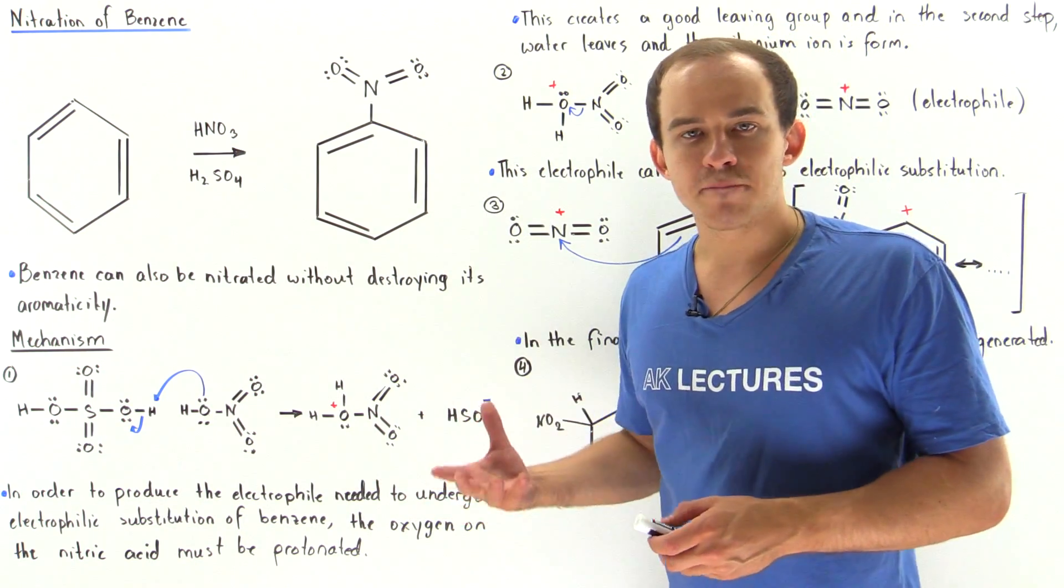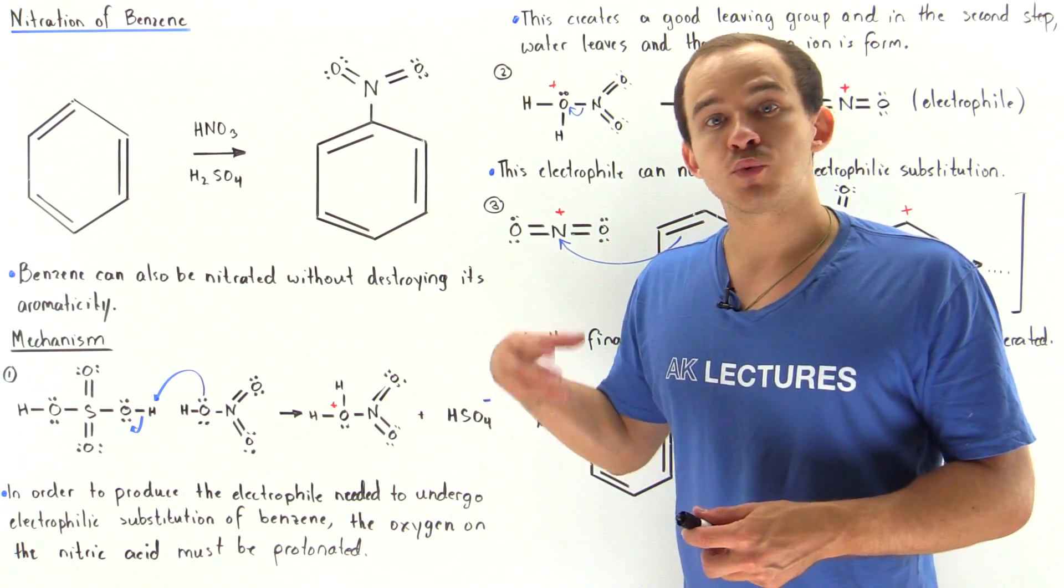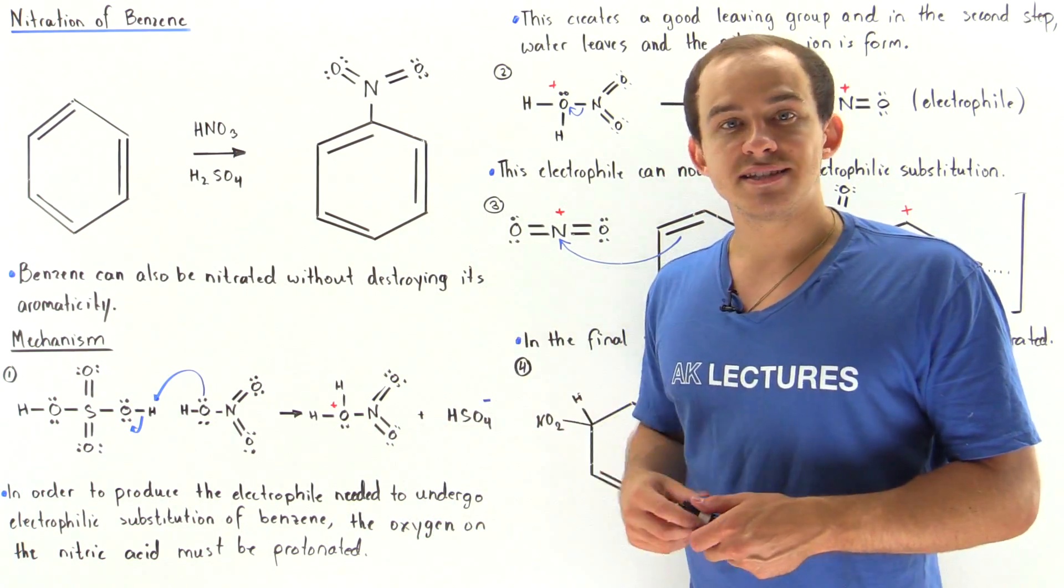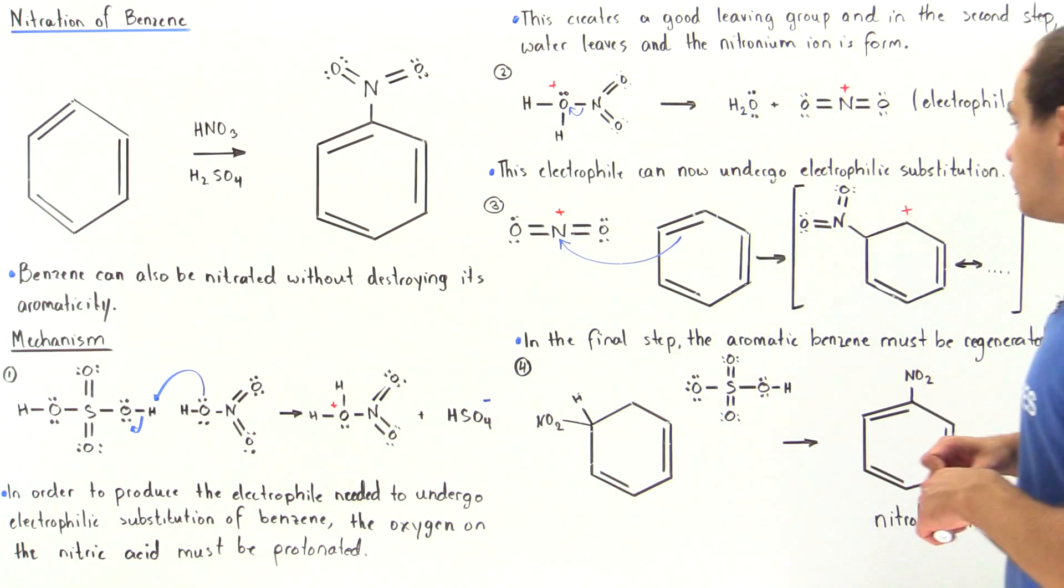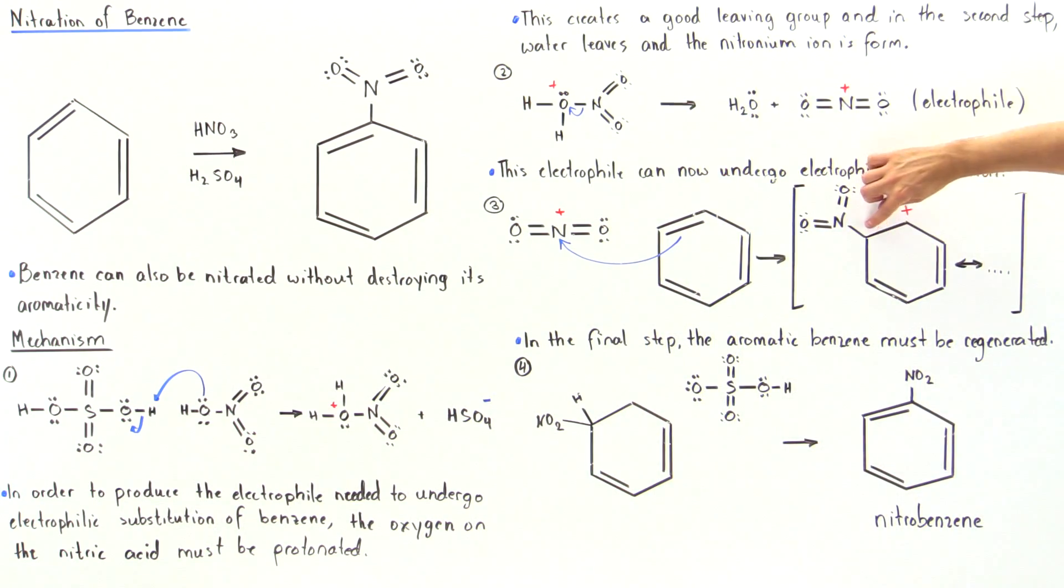Now in the final step we have to deprotonate our benzene molecule. We deprotonate on this carbon to form our pi bond, regenerating our aromatic ring. In the final step the aromatic benzene must be regenerated.